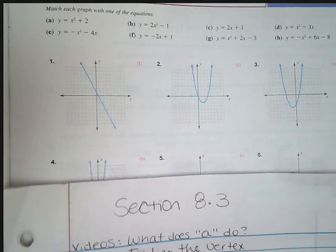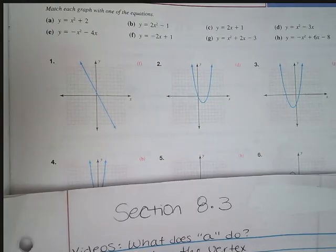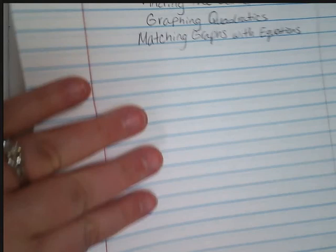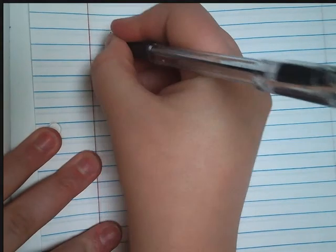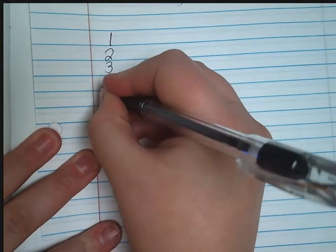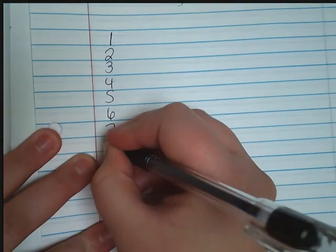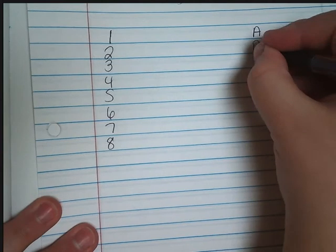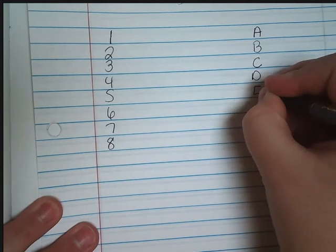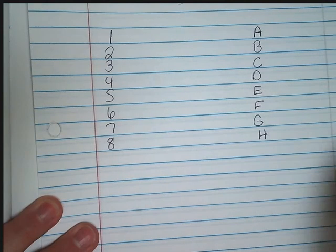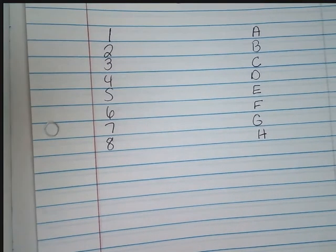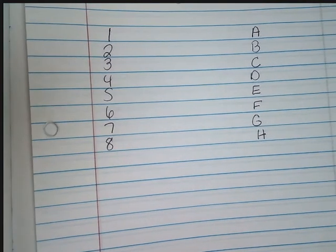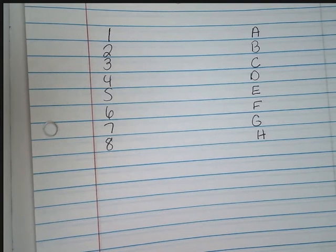The directions state to match each graph with one of the equations. We have eight graphs and eight equations. I recommend you number your paper one through eight and then letters A through H. That way once we match one equation with one graph we can cross that out so we don't use the same equation twice.